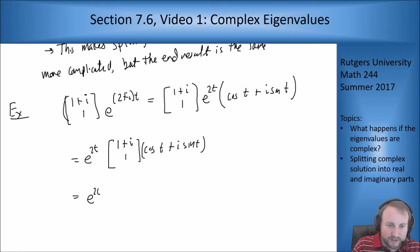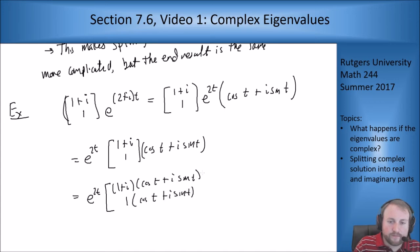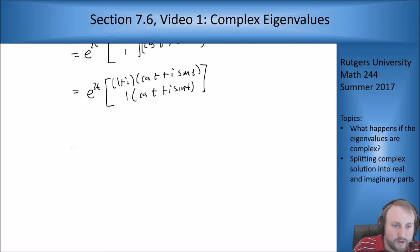So I get e to the 2t times ((1+i)(cosine t + i sine t), 1(cosine t + i sine t)). And now the first term on the top of the vector I have to foil that out. So I get e to the 2t times